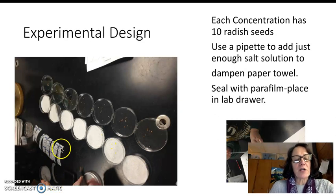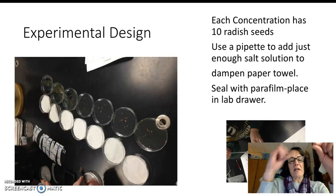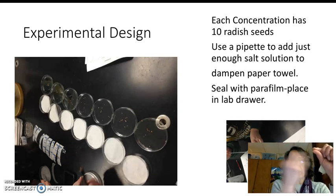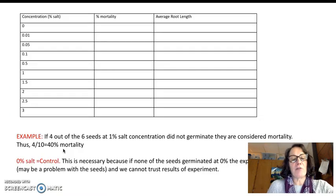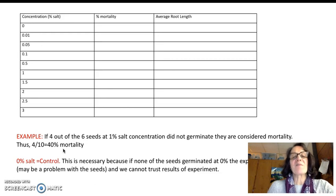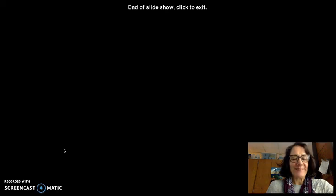Next, take some pre-cut pieces of parafilm and seal the Petri dish all the way around it. Then stack the Petri dishes and put them in your lab drawer until next week when we take a look at our results. Then we'll talk more about graphing. Good luck with your pre-lab — see you in the lab.